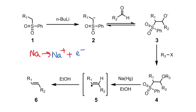Once this radical is left behind, in the presence of ethanol it picks up an H dot and produces the olefin. Prior to that, there is actually an elimination reaction that occurs, and this elimination has R1 and R2 trans to one another. So in Julia olefination, we end up with an olefin produced in this manner.